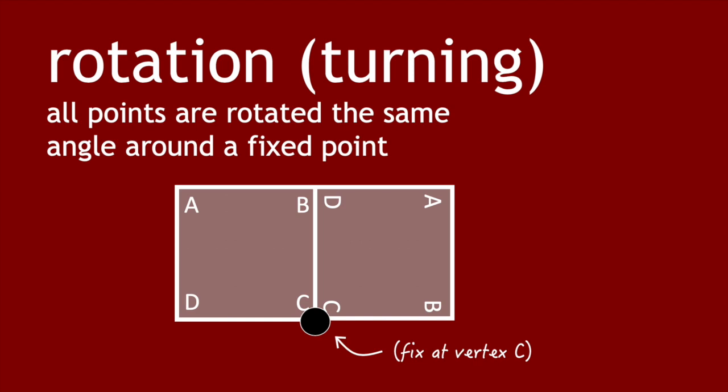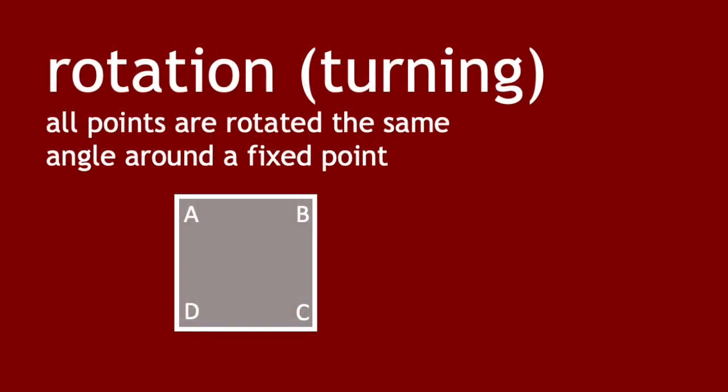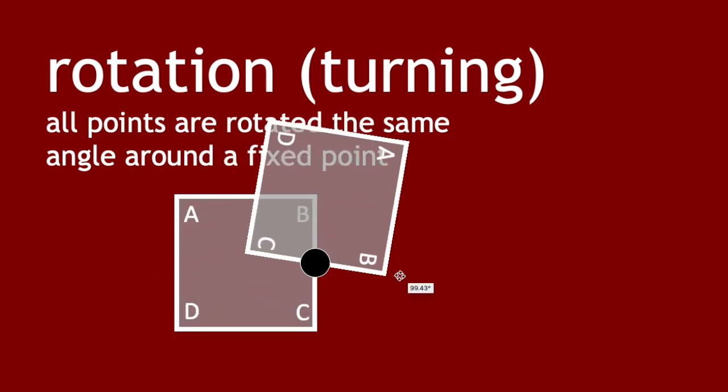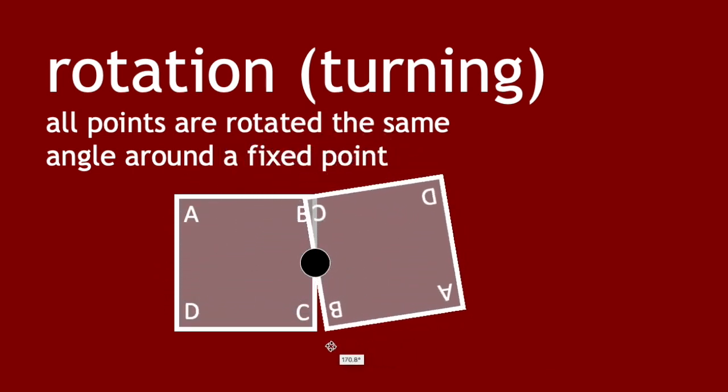We can also rotate them around the midpoints. In this case, we'll be fixing the midpoint of one of the sides and rotating the square 180 degrees so that the side sits against itself.